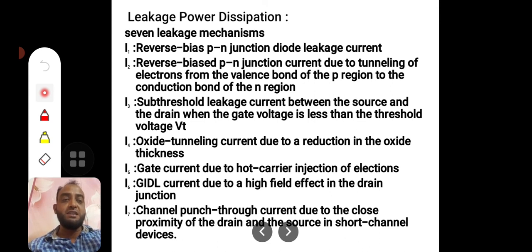Gate current due to hot carrier injection is another kind of leakage current which is very similar to oxide tunneling. All these currents produce a power dissipation which is altogether called leakage power dissipation.